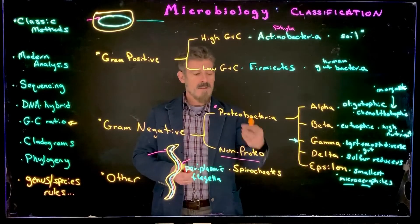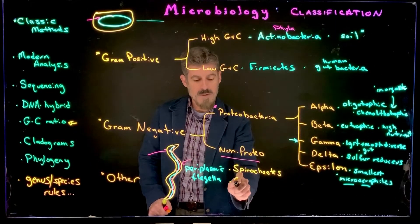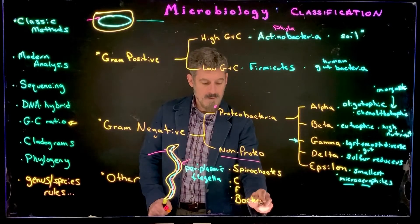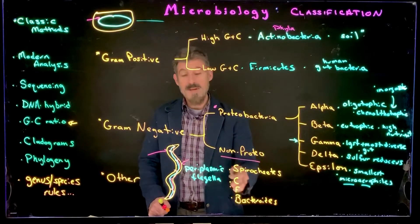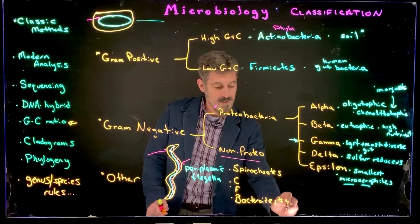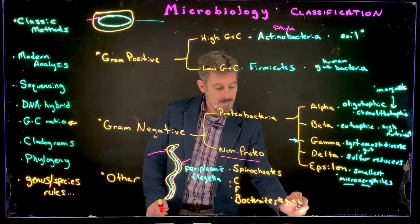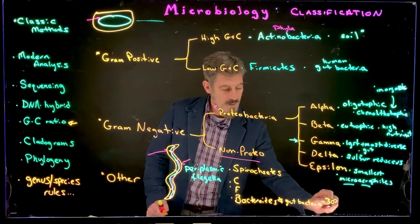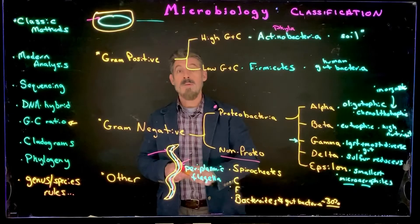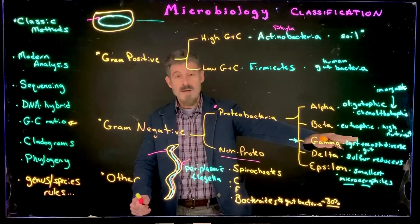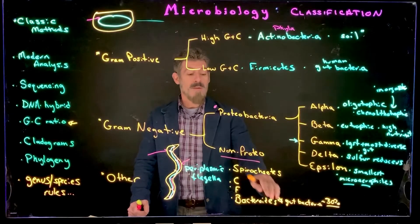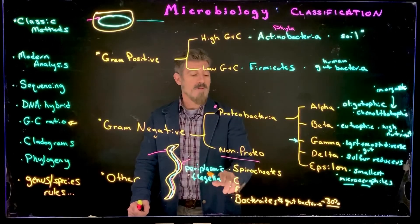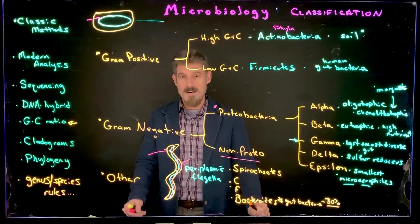Beyond the spirochetes, there is a subgroup called the CFB group. Bacteroides — the 'B' in CFB — is another very important human gut bacteria group. As much as 30% of your gut bacteria may belong to this one group. While we mentioned gut bacteria in gamma-proteobacteria, Bacteroides are actually non-proteobacteria in a different classification, yet they make up a large amount of gut bacteria.